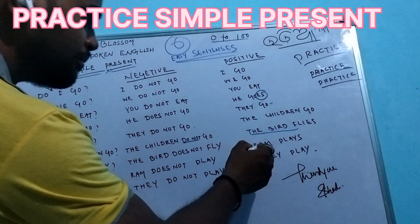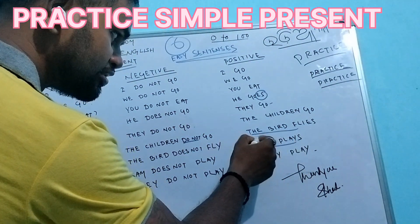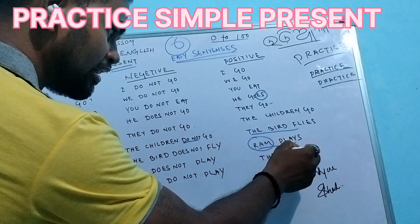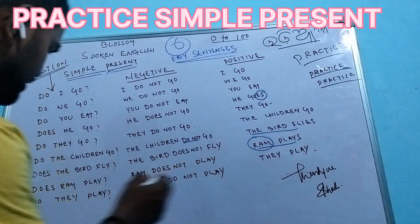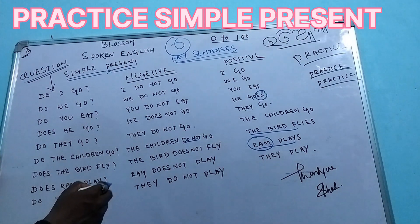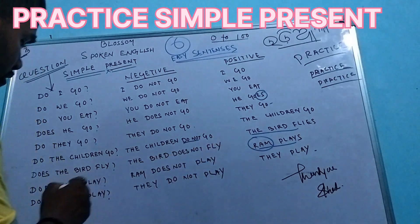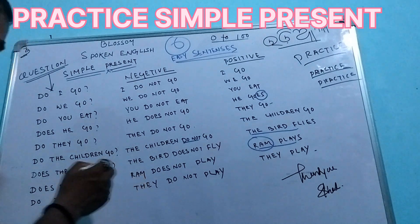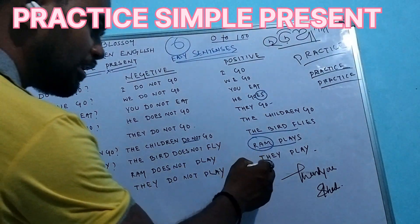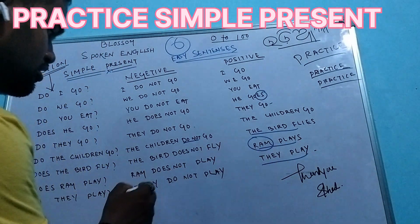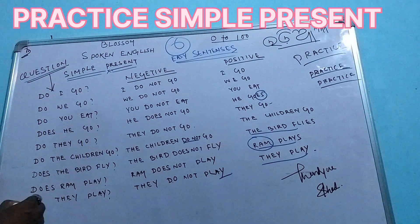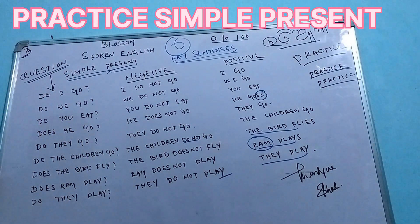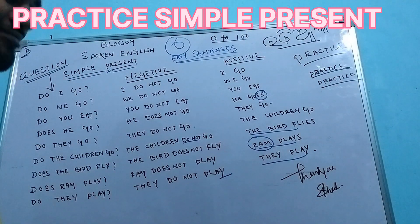Ram plays. Ram doesn't play. Does Ram play? They play. They do not play. Do they play? These are the easy sentences. Thank you.